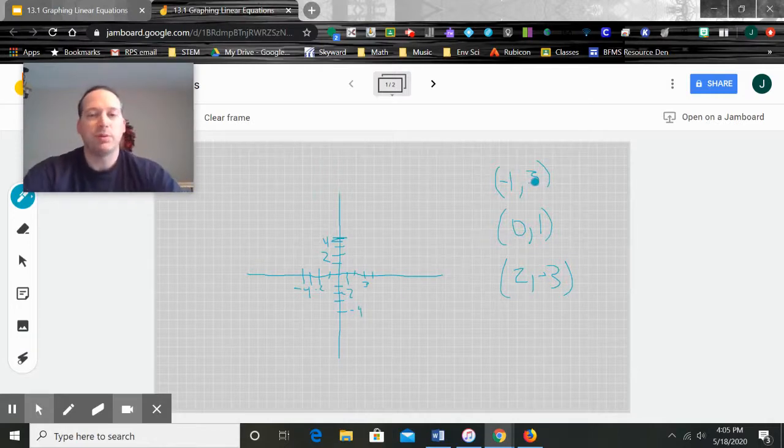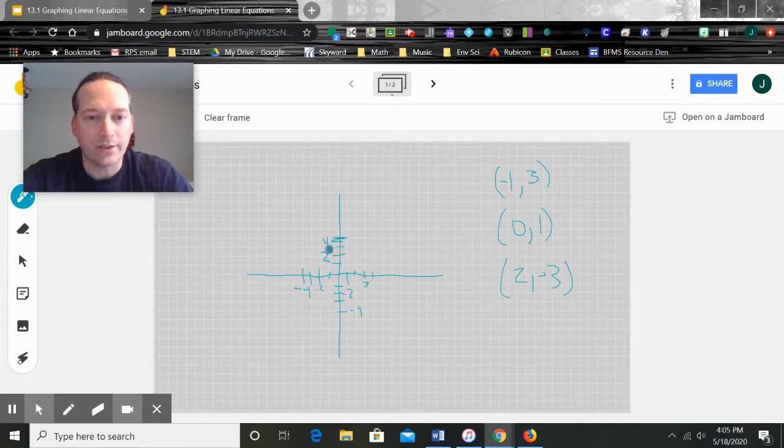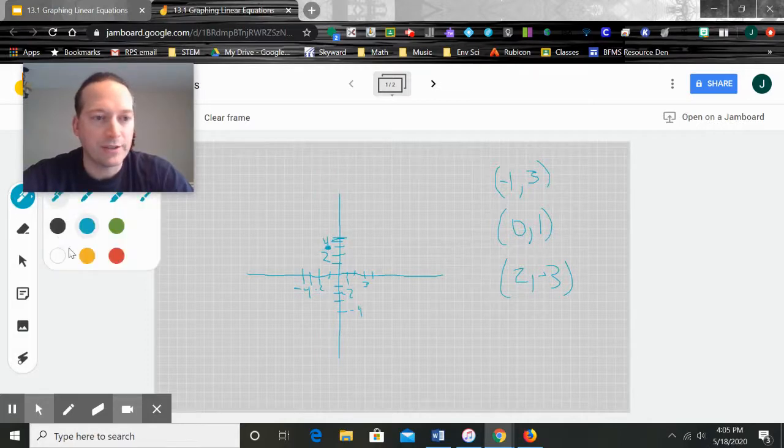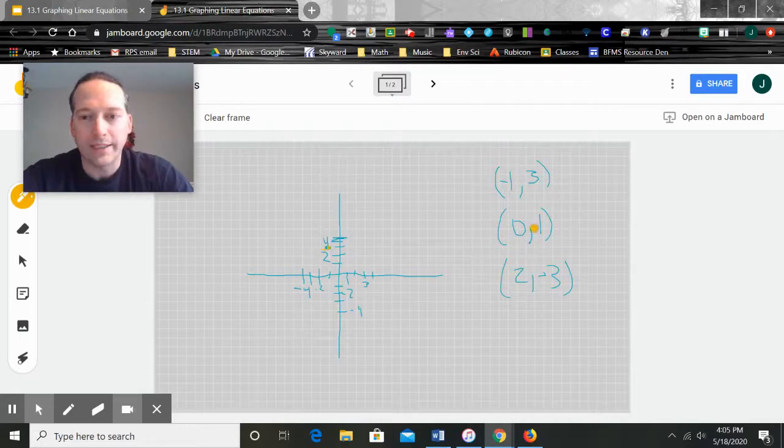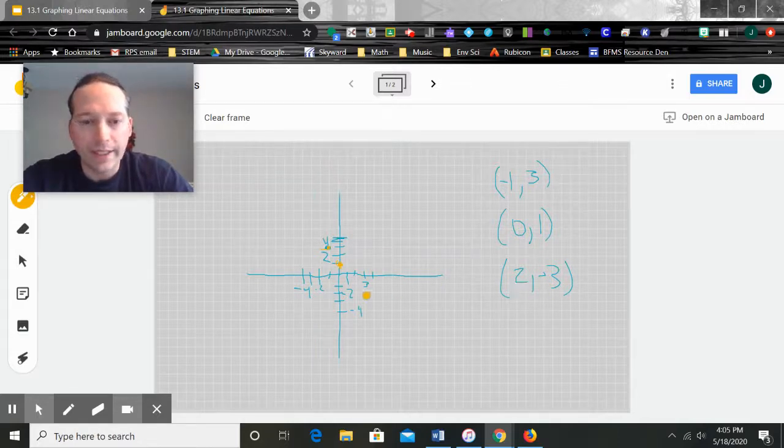So the first thing I need to do is plot point negative one, three. So here's negative one, here's three. Let me change colors so you can see it better. There we go. Next one is zero, one. So here's zero, one. Make my point. Next one is two, negative three. So X is two, Y is negative three.